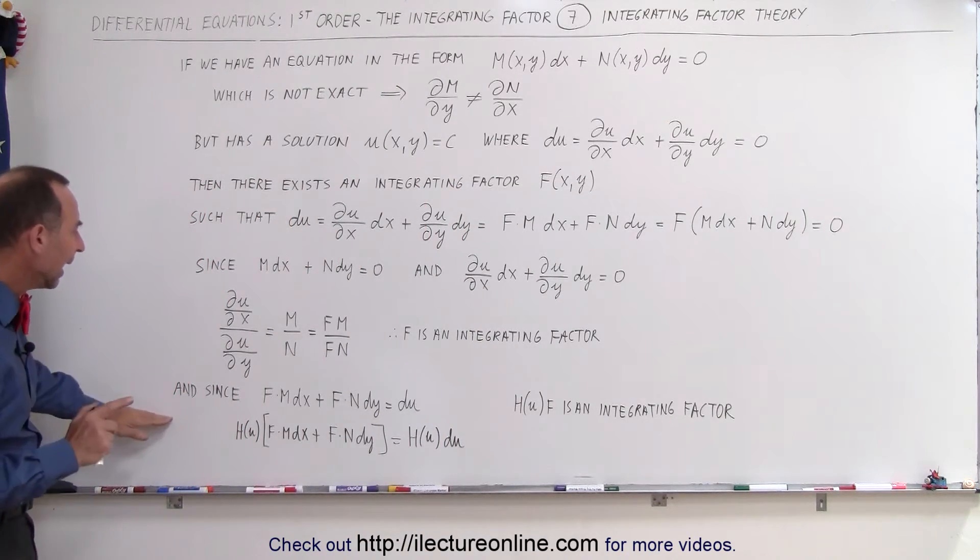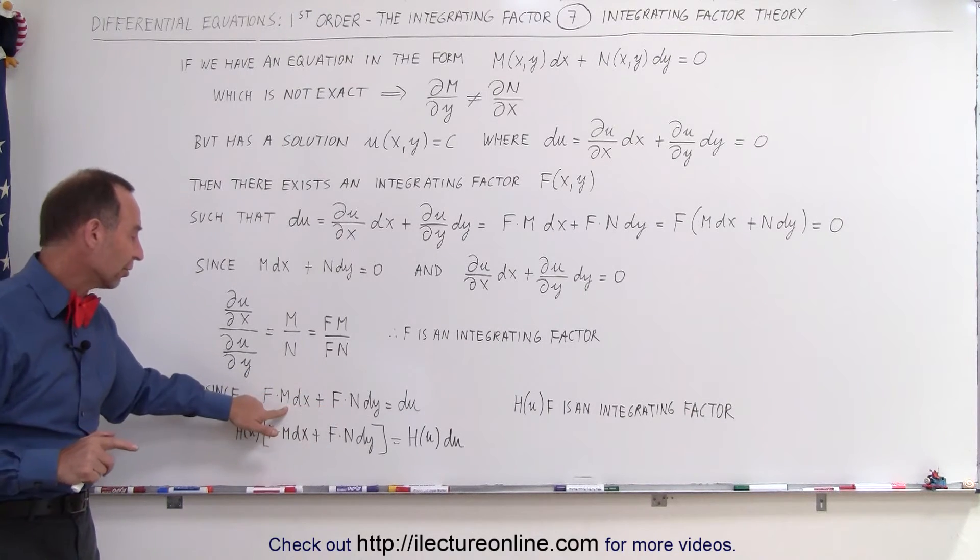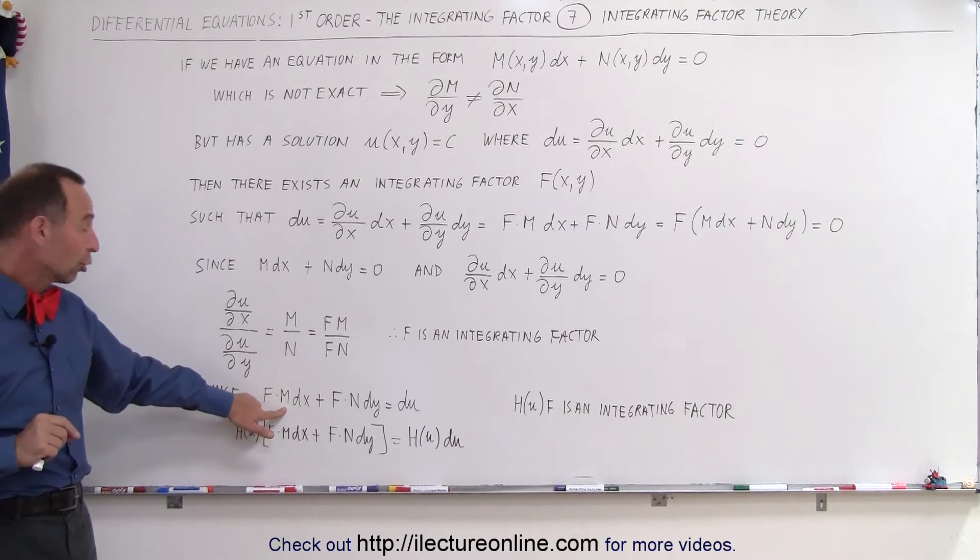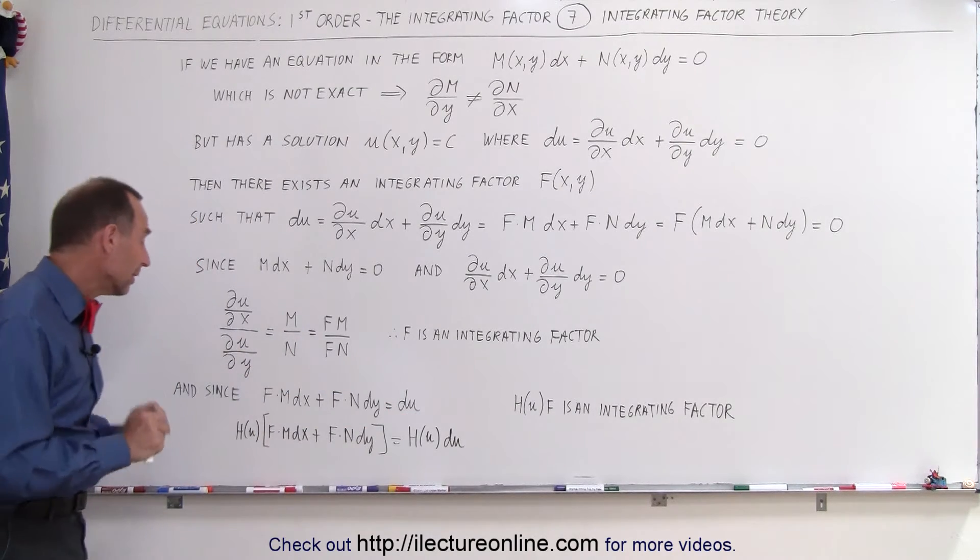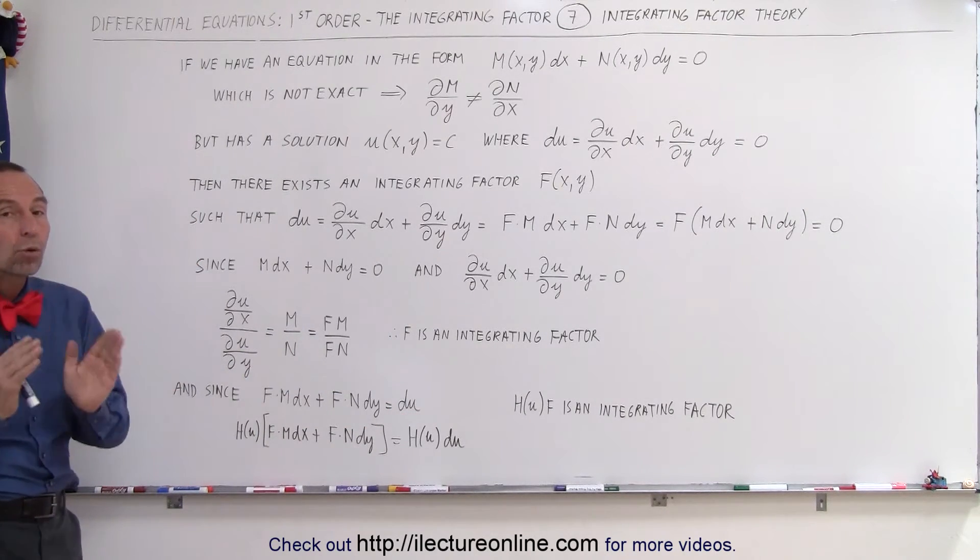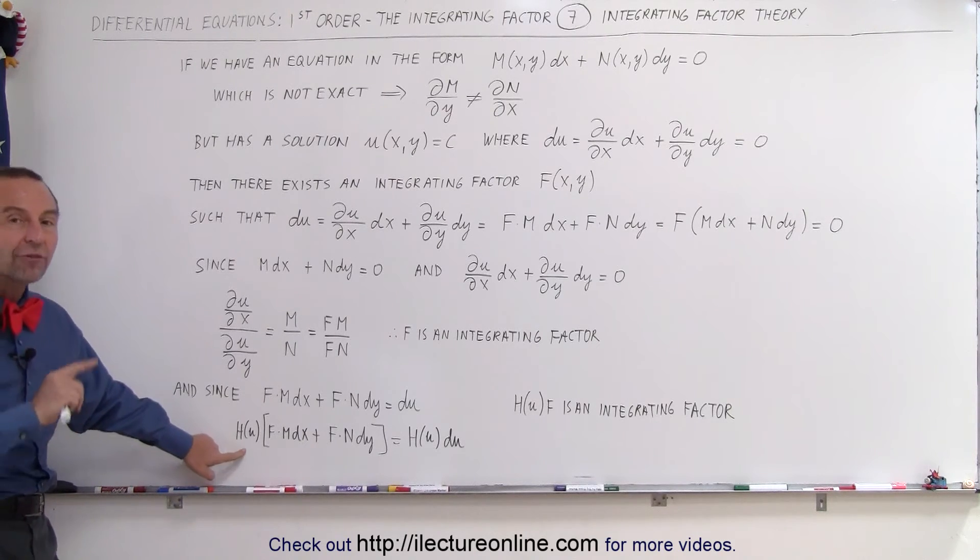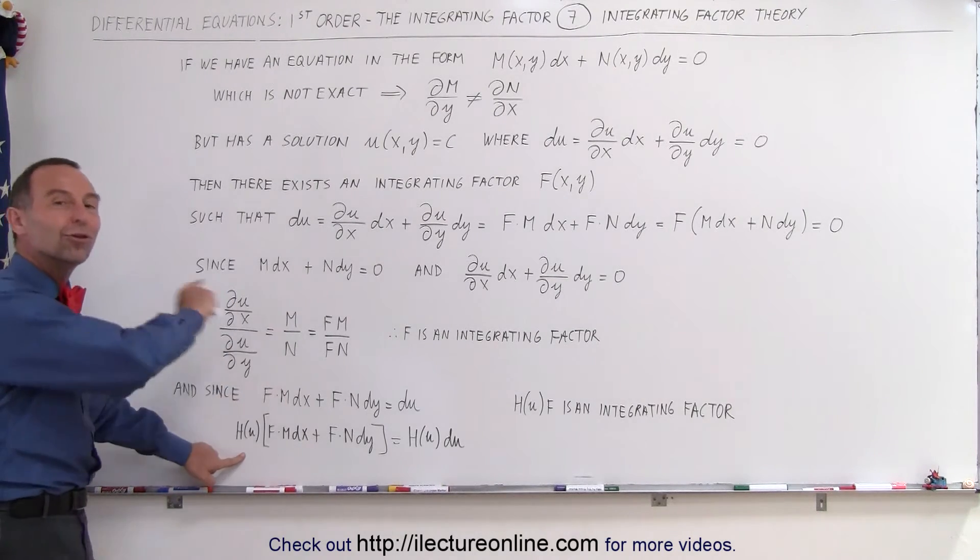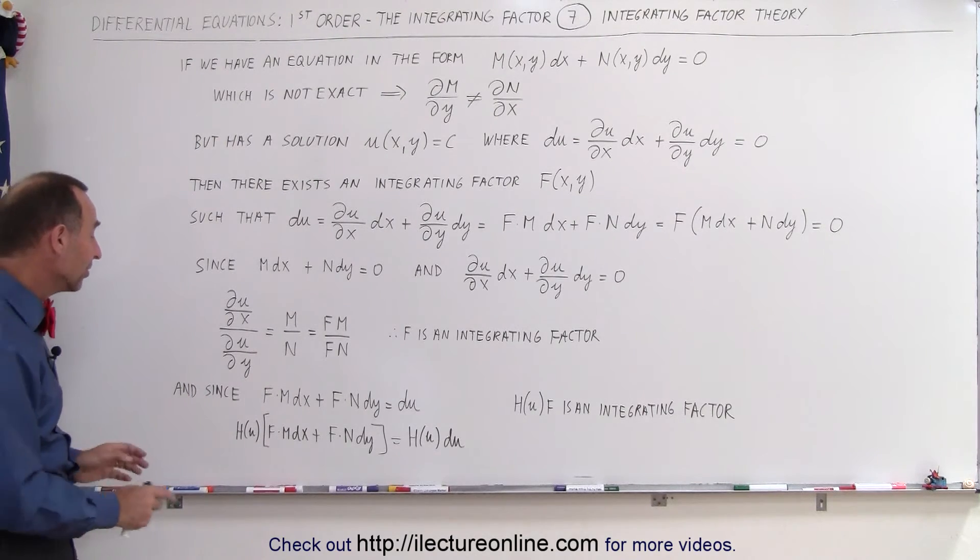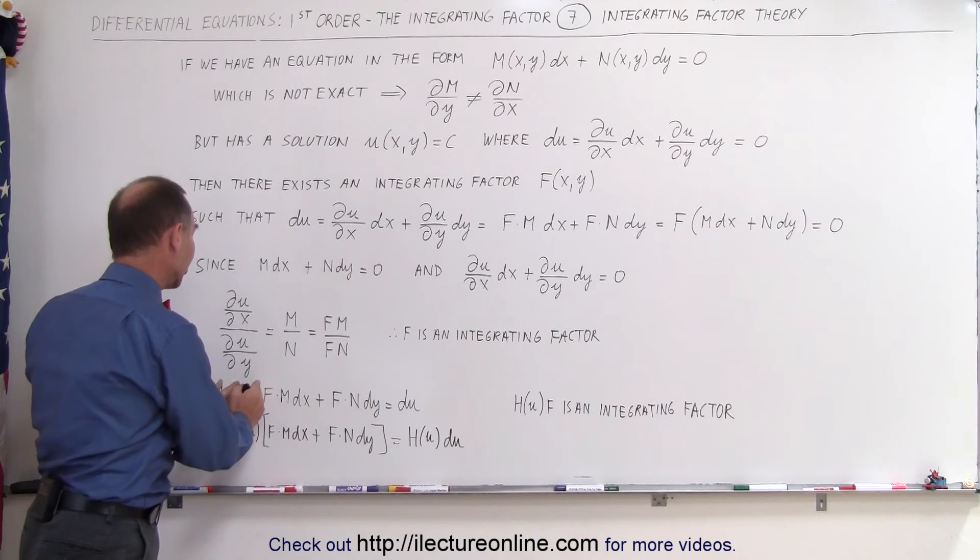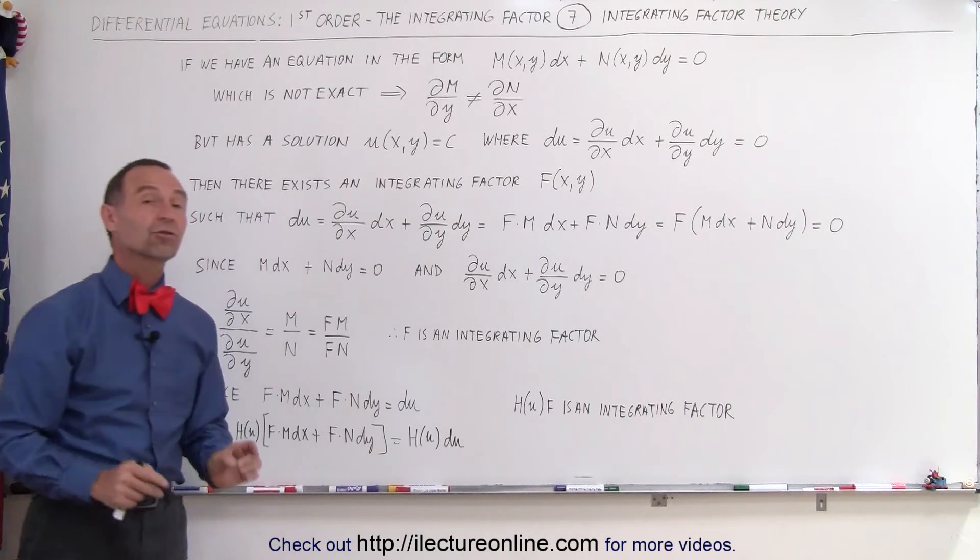We can also say that since when we multiply times the integrating factor, the original differential equation, and we still know that it's equal to du, then we can say if we then multiply both sides by a function h, which is a function of the solution to the differential equation u, and if we do that to both sides, then we can say that multiplying this times some function of u, and multiply the right side by some function of u, that they still must be equal to each other.